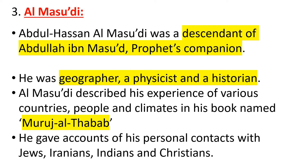He gave accounts of his personal contact with Jews, Iranians, Indians, and Christians. In the areas where he moved, he had close contact with persons not only Muslims, but also Indians, Christians, Iranians, and Jews. All historians were very good at public relations — they would sit with people and seek to know about history and gather information from them. That is a nice quality to be a good friend and good human being as a historian.